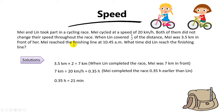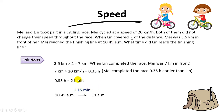The question says May reached the finishing line at 10:45 am, and we want to find the time Ling reached the finishing line. Do we add or subtract 21 minutes from 10:45 am? The answer is we add, because May is faster, meaning Ling will reach 21 minutes later than May. To find this time, let's draw a timeline: add 15 minutes first to get 11:00 am, then add 6 more minutes — because 15 plus 6 equals 21 minutes — so the final answer is 11:06 am.